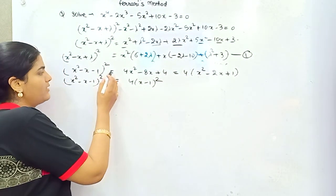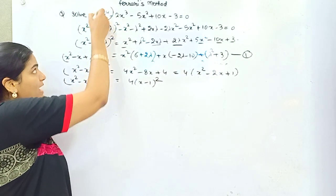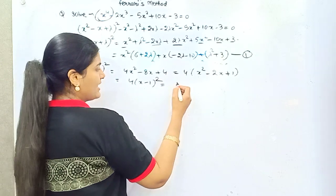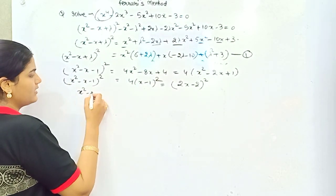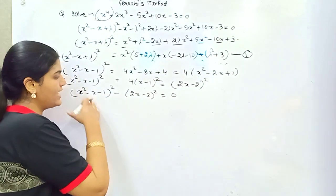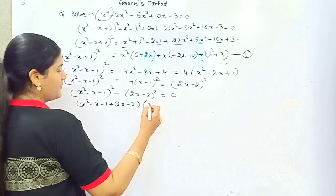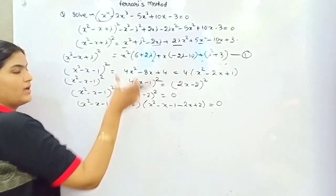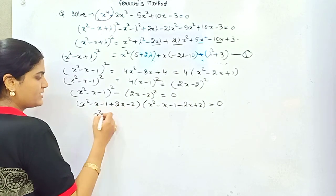You might think of cancelling the 2 with 2 or writing it as 2², but don't do this — you would get only 2 roots. Since this is a bi-quadratic equation of degree 4, you should have 4 roots. Instead, write the 4 as (2x minus 2)² and bring this to the left-hand side, forming the shape of a² minus b² = (a+b)(a−b). So you get two quadratic factors: (x² + 2x − x minus 3) and (x² minus 3x + 1).